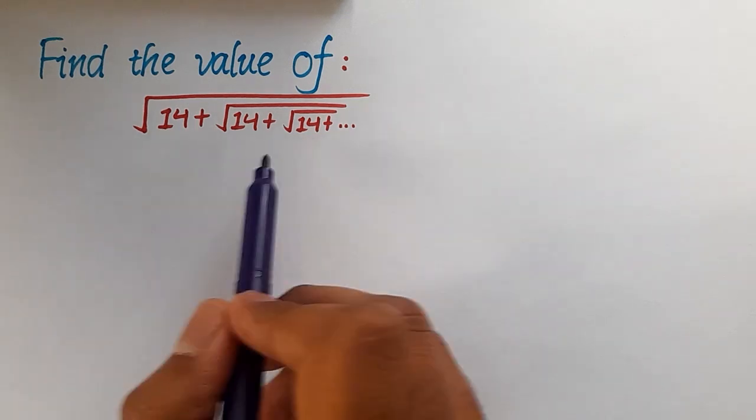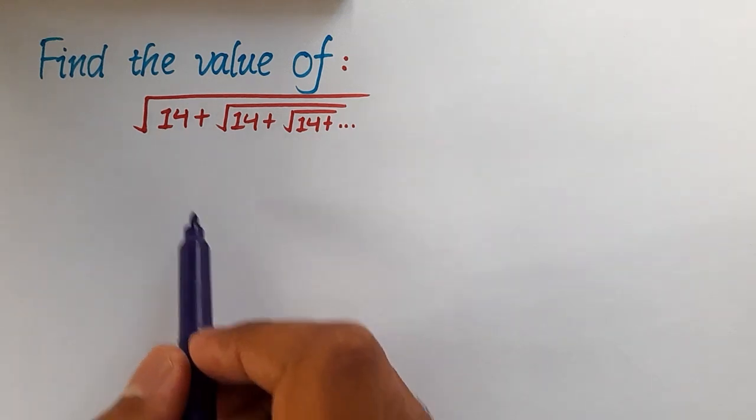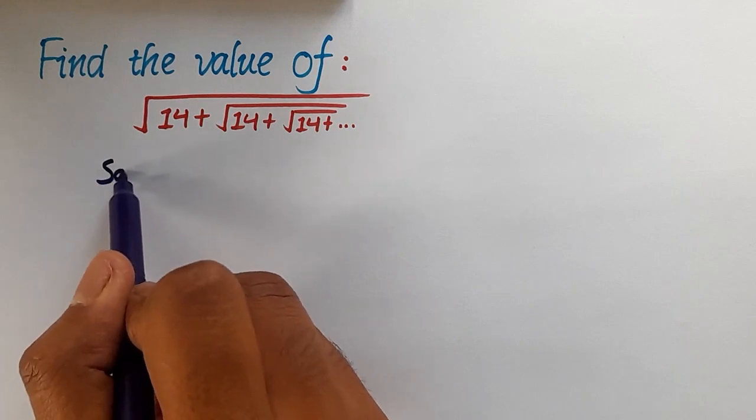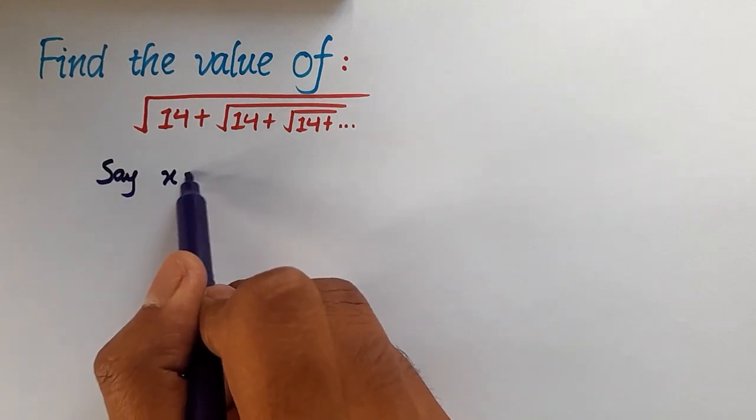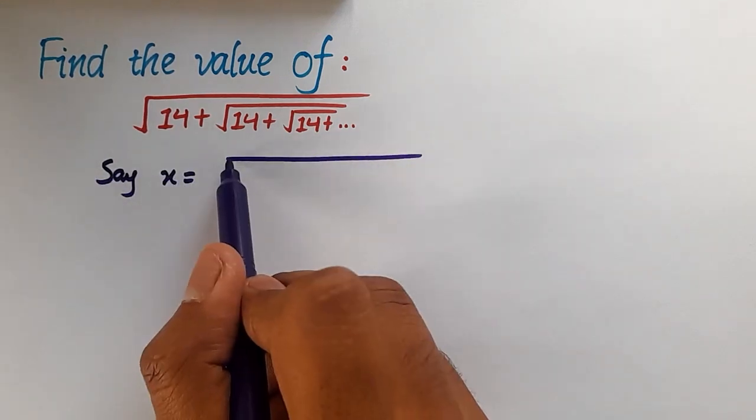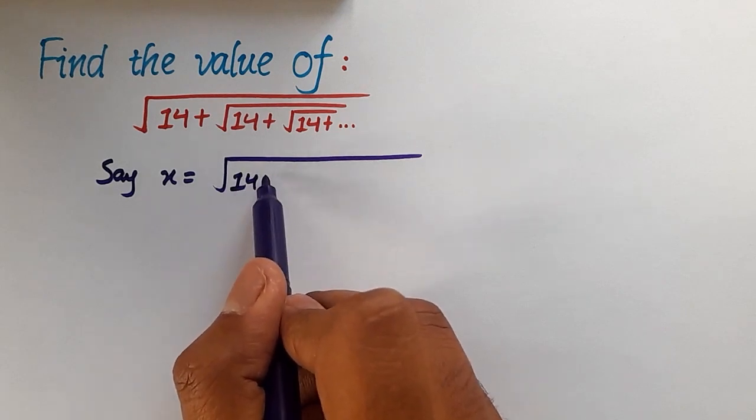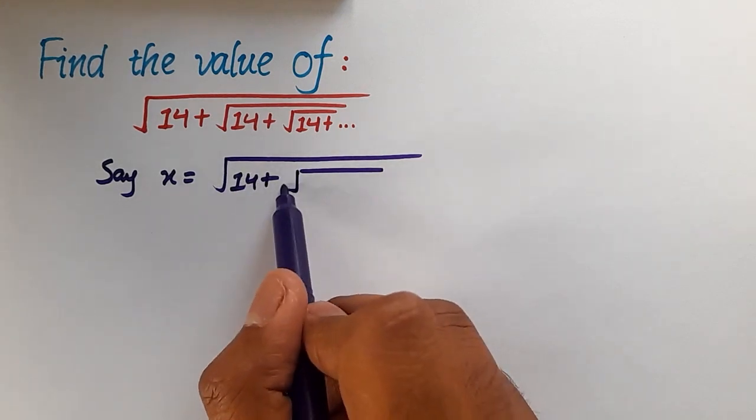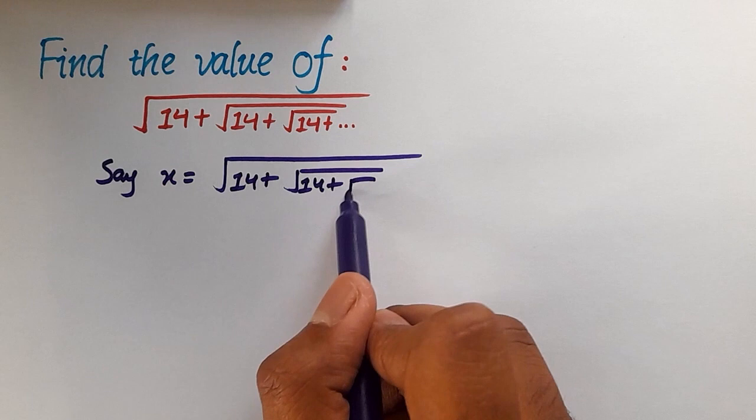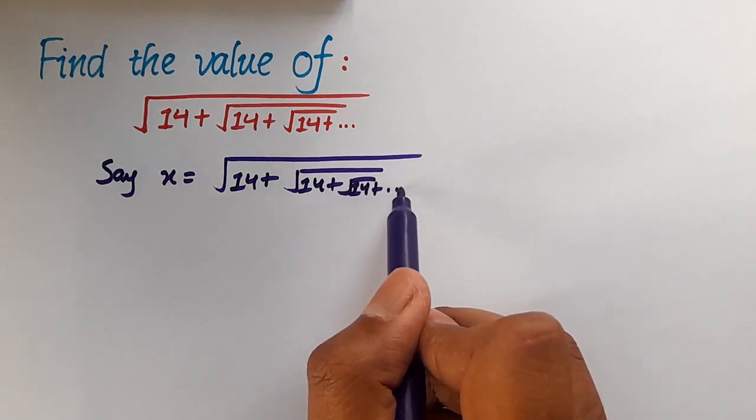First, let's assume that this expression is equal to a value x. So let's say x is equal to root under 14 plus root under 14 plus root under 14 plus and so on.